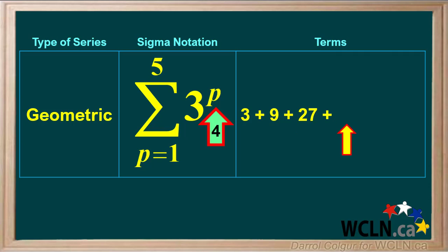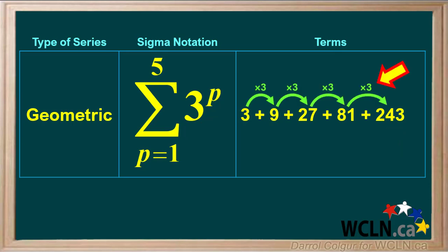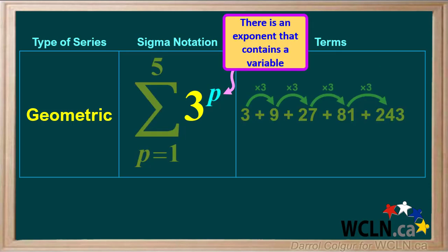For the next term, p is equal to 5, and this is the last term. Its value is 3 to the power of 5, or 243. Looking at the terms, we need to multiply each term by 3 to get the next term, so this is a geometric series for which the common ratio r is equal to 3. Looking at the function, we see that it does have an exponent which contains a variable — p in this case. This is another way to tell that we're dealing with a geometric series.